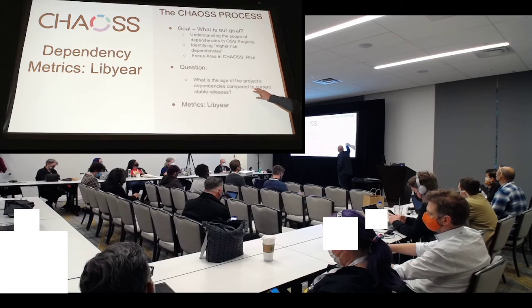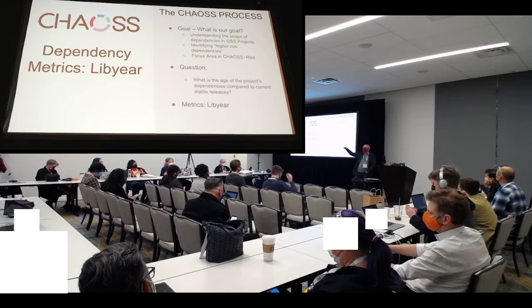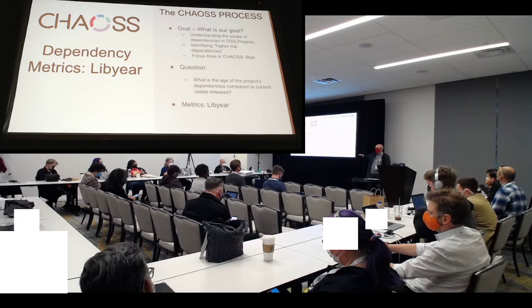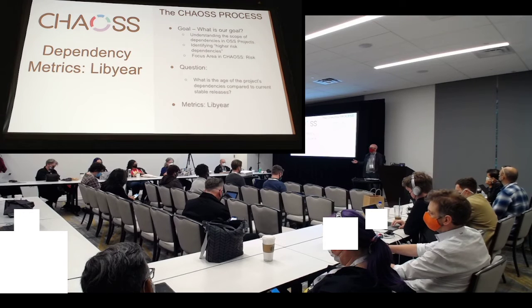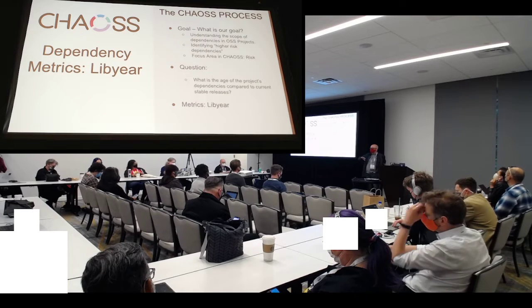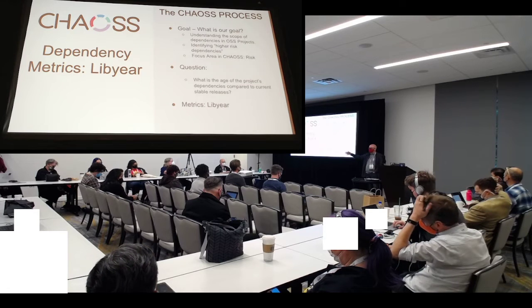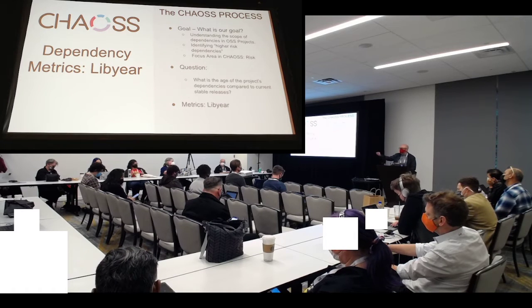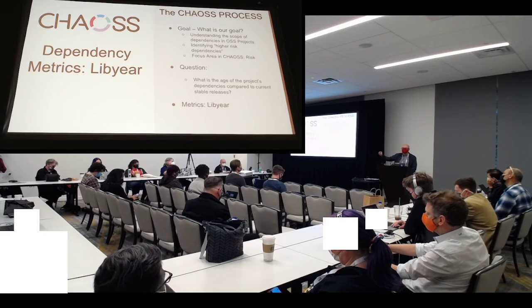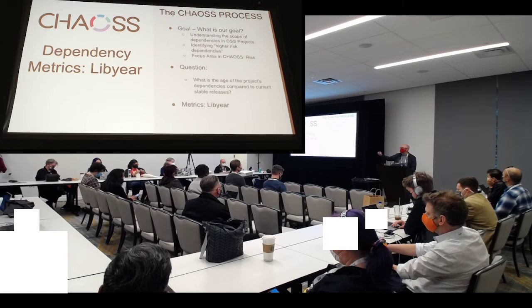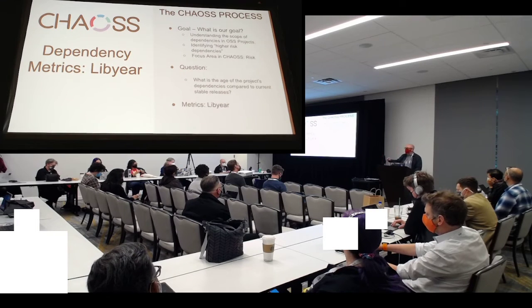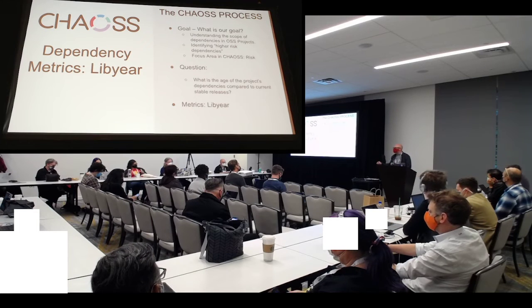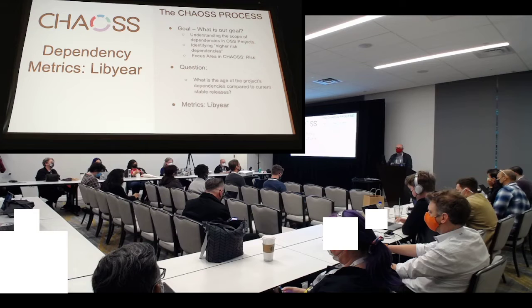The question is: what is the age of the project dependencies compared to the current stable release? You can look at it at a project level and understand how out of date each individual dependency is. You can also look at it at an OSPO level and ask what's the total number of Libyears a particular project is out of date, and across all of those projects, which dependencies are most important? If you have 11,000 projects in your OSPO, which dependencies place you at the highest risk? You can use Libyear to get a coarse-grained view — instead of looking deeply into 11,000 projects, you can focus intently on the 50 or 500 dependencies that pose the most significant risk.